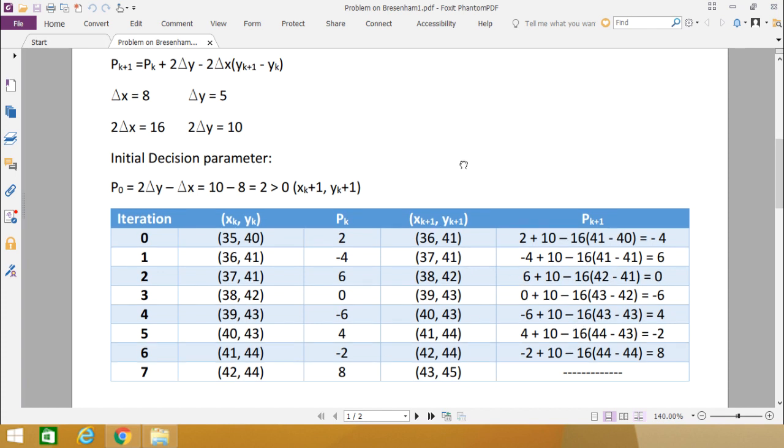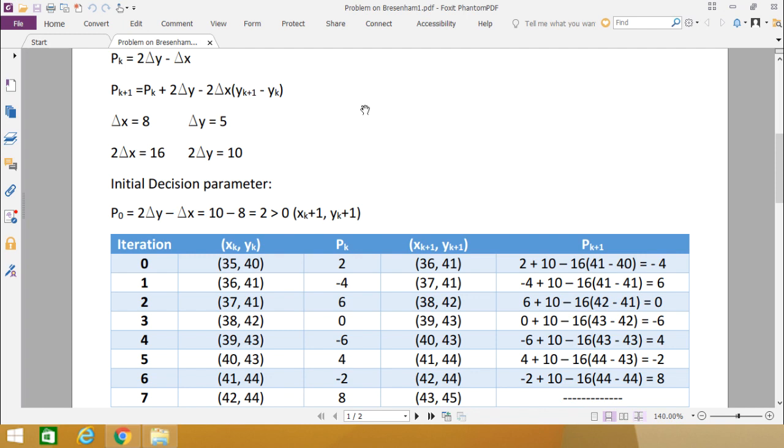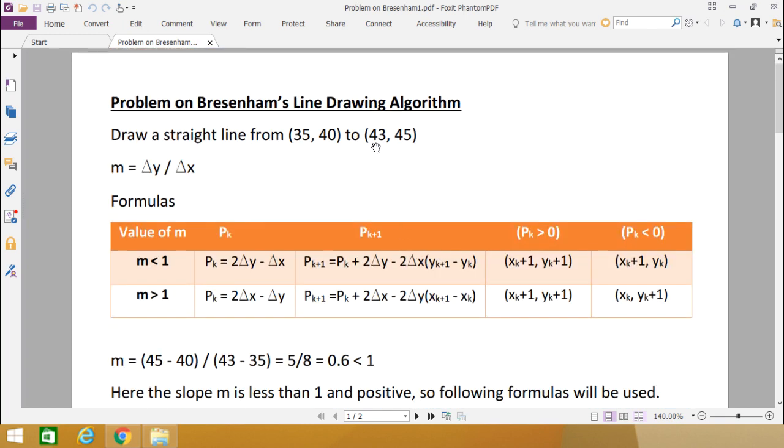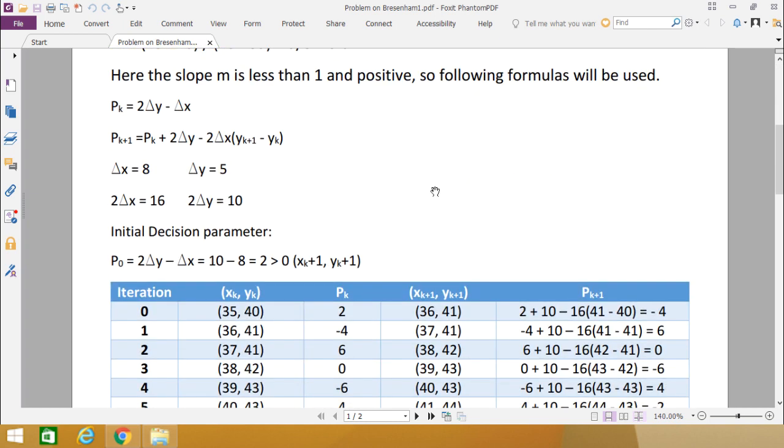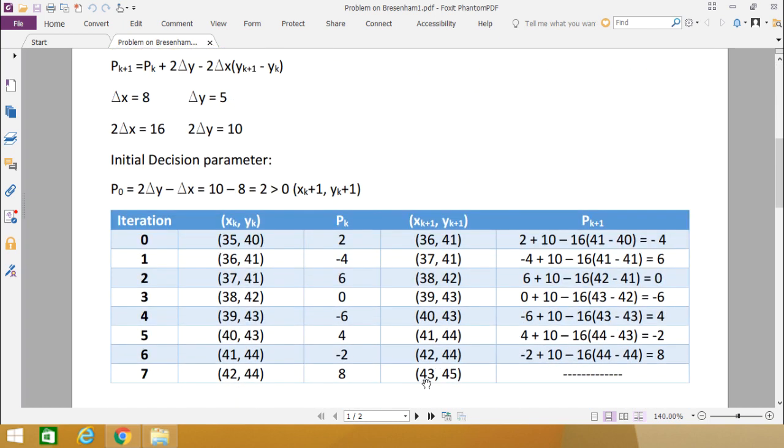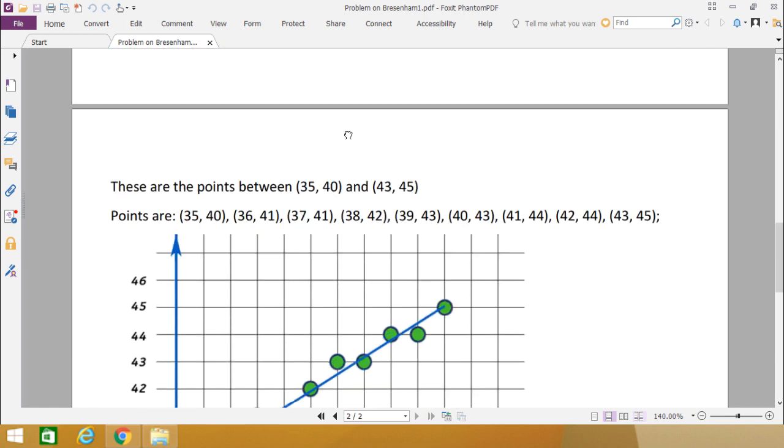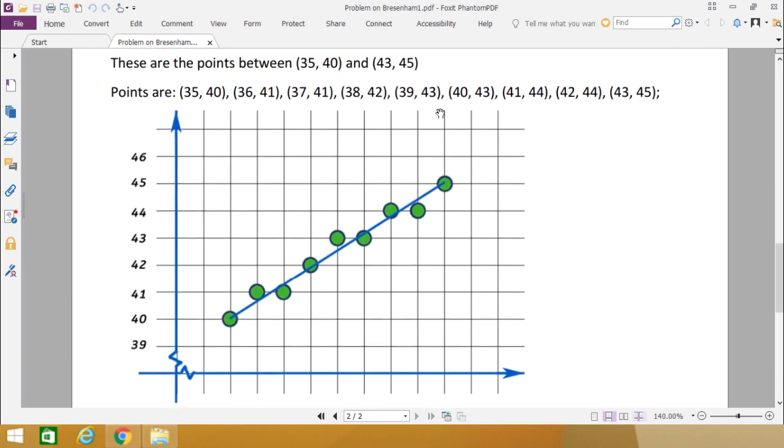You can pause the video at this particular stage. You can see how the calculations have been obtained. Our terminating coordinate will be (43, 45). We have done up to (43, 45), and these calculations we have done in very detail so that you can easily understand how the next coordinates are getting calculated. We have the respective points and we have plotted this point to draw this straight line using Bresenham's line drawing algorithm.